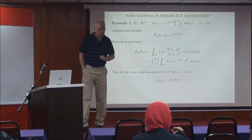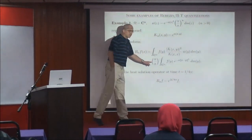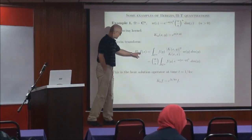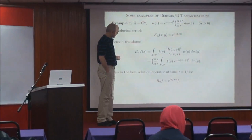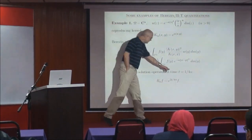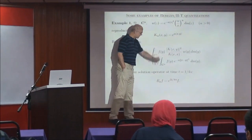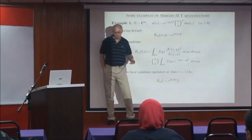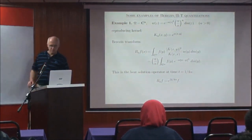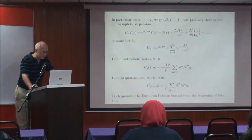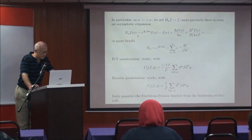Anyone who has a PDE background knows what this is. This is precisely the heat kernel solution — the solution of the heat equation. This is the solution of the equation involving the Laplacian of F, applied at time 1 over 4 alpha. So in other words, the Berezin transform corresponding to the weight with parameter alpha is just the exponential of the Laplacian over 4 alpha.